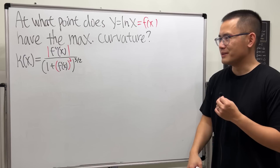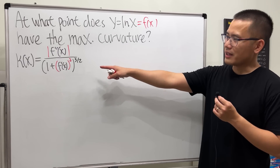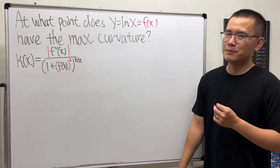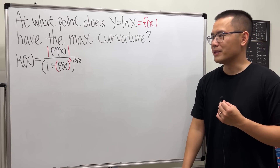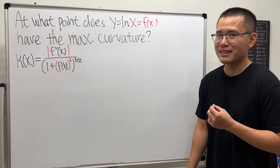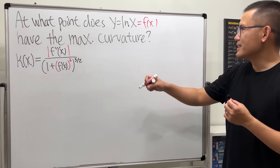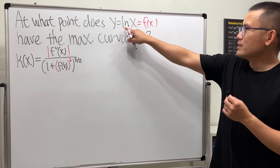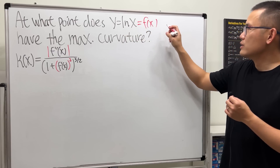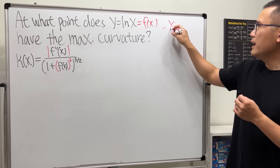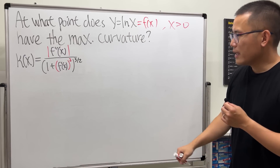With that formula, this turns out to be just a Calculus 1 question because you'll just be taking derivatives. One small note before we start: we have ln(x), so x must be greater than 0 for the domain — keep that in mind.